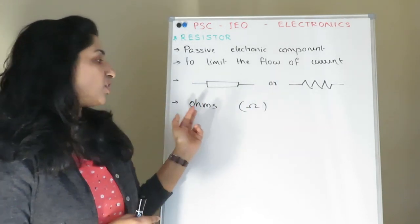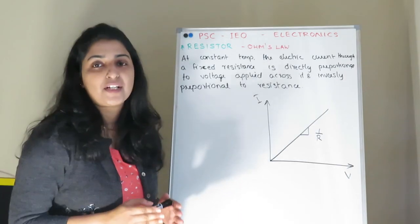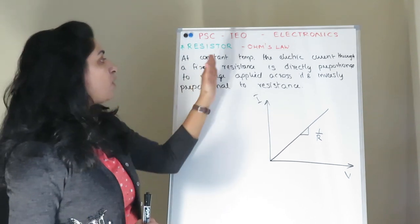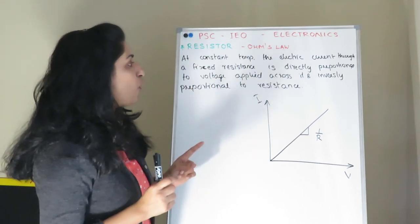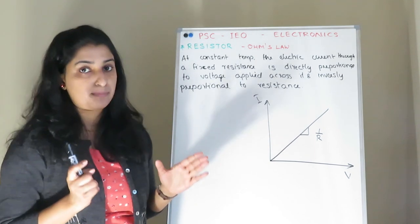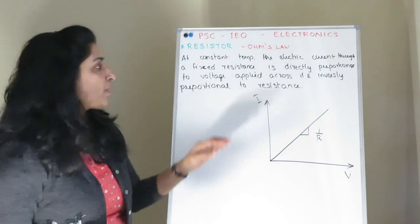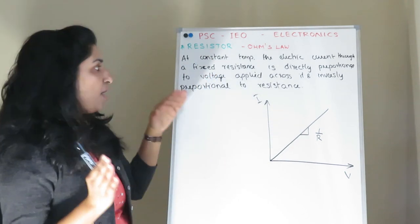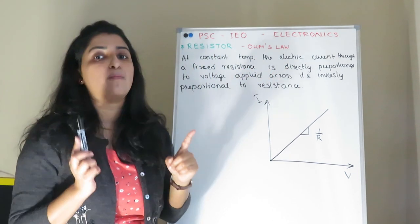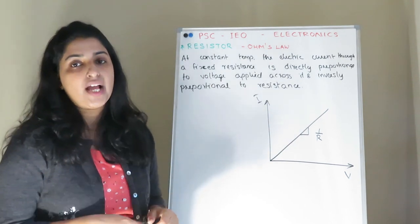This resistor is measured in the unit of ohms. What is Ohm's Law? At constant temperature, the electric current flowing through a fixed resistance is directly proportional to the voltage applied across it and inversely proportional to the resistance.